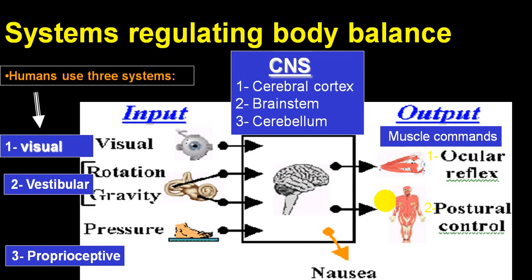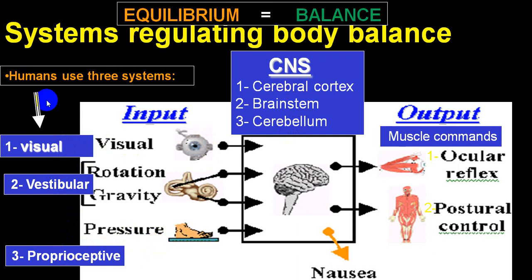Before we go into that, we should understand that there are three inputs: visual input, vestibular input, and proprioceptive input, which will go to the cerebral cortex, brainstem, and cerebellum. That will result in maintenance of posture, and we call it vestibular-ocular reflexes. Input is given by the eye, by the vestibular apparatus, and regarding proprioceptive sensation from the lower limb — sensory input — and that will take part in maintenance of posture and equilibrium.